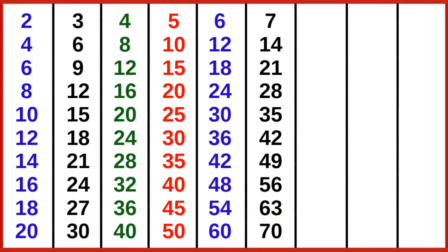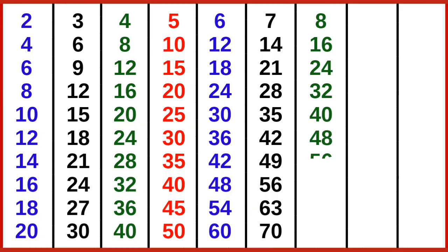8 ones are 8, 8 twos are 16, 8 threes are 24, 8 fours are 32, 8 fives are 40, 8 sixes are 48, 8 sevens are 56, 8 eights are 64, 8 nines are 72, 8 tens are 80.